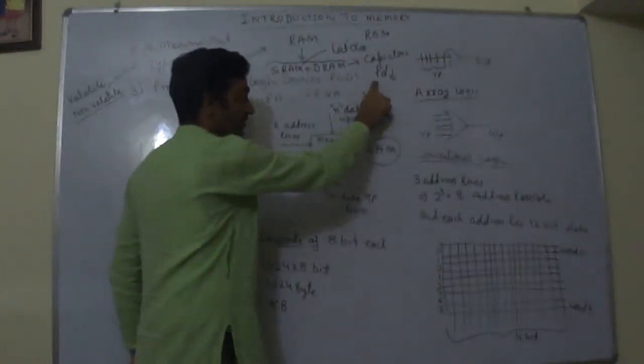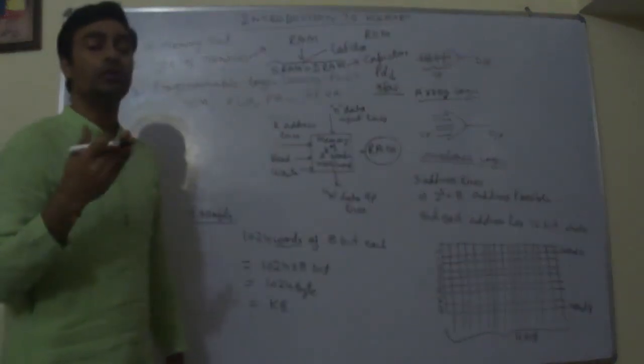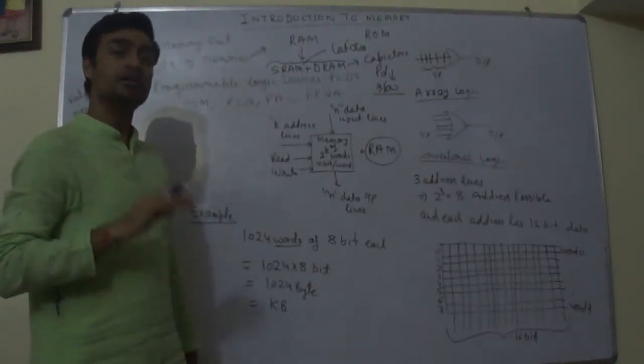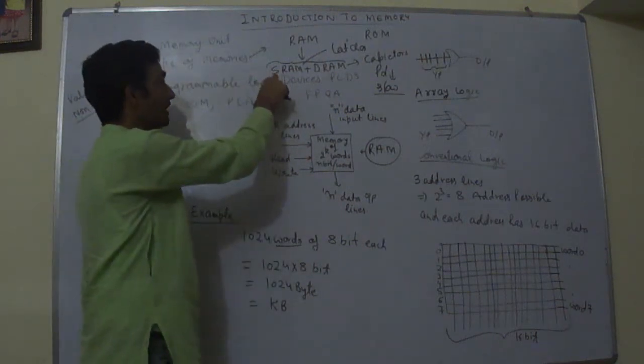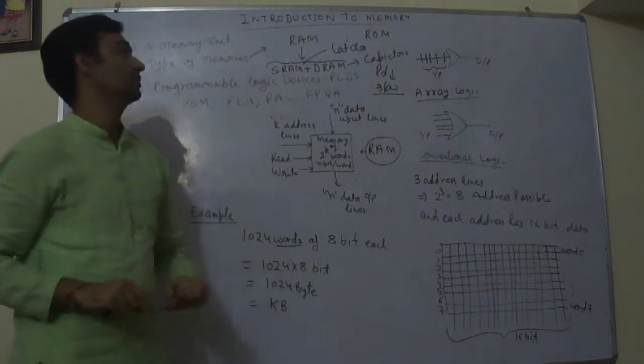Power consumption is low and it is slow. Accessing a memory location using DRAM is slow process. SRAM is fast and it is made up using latches.